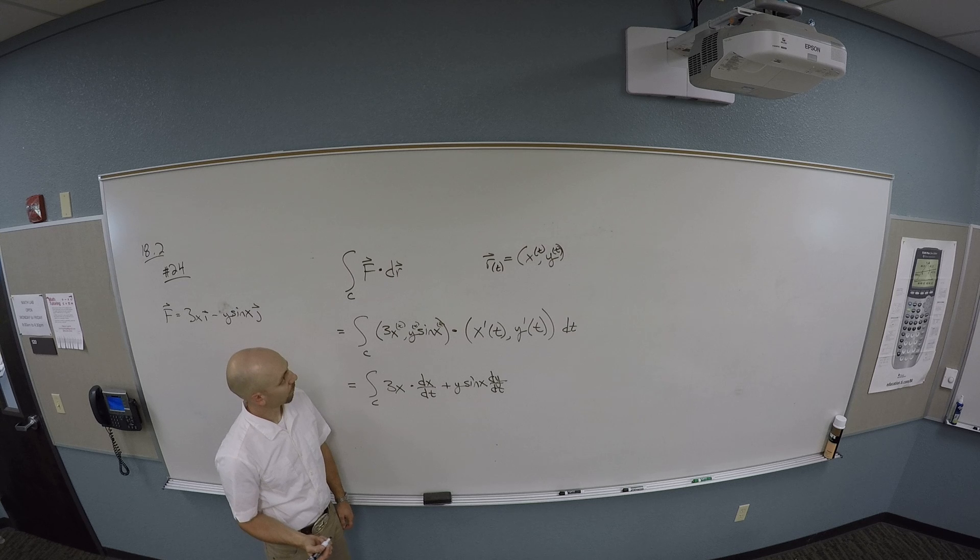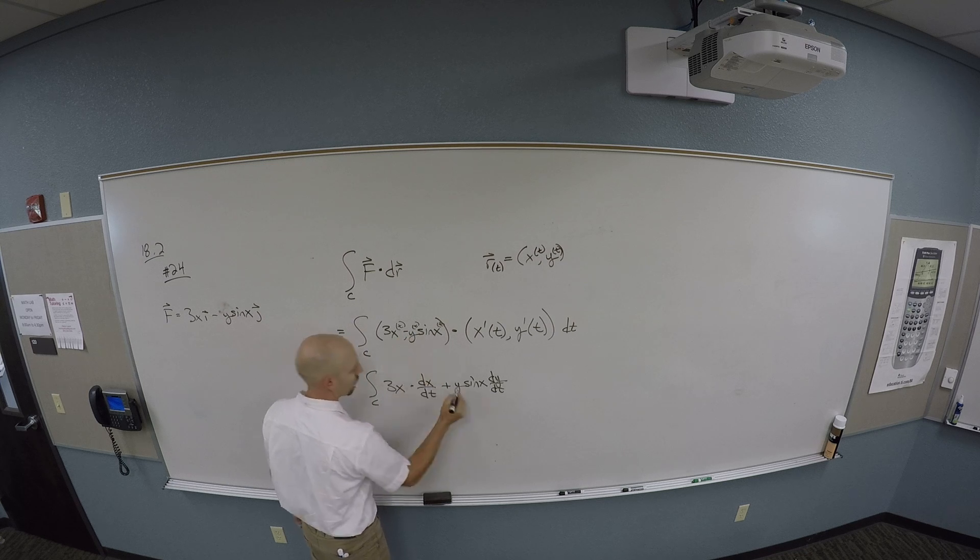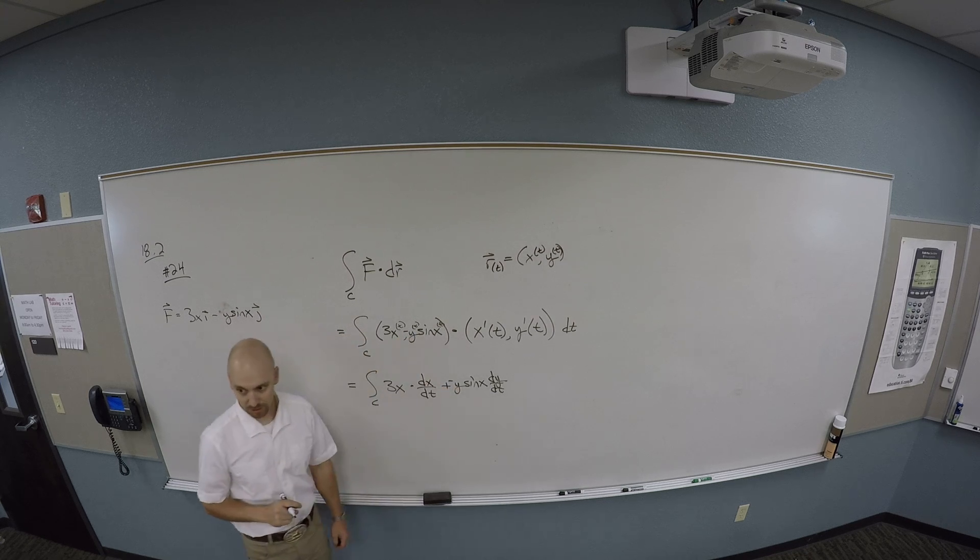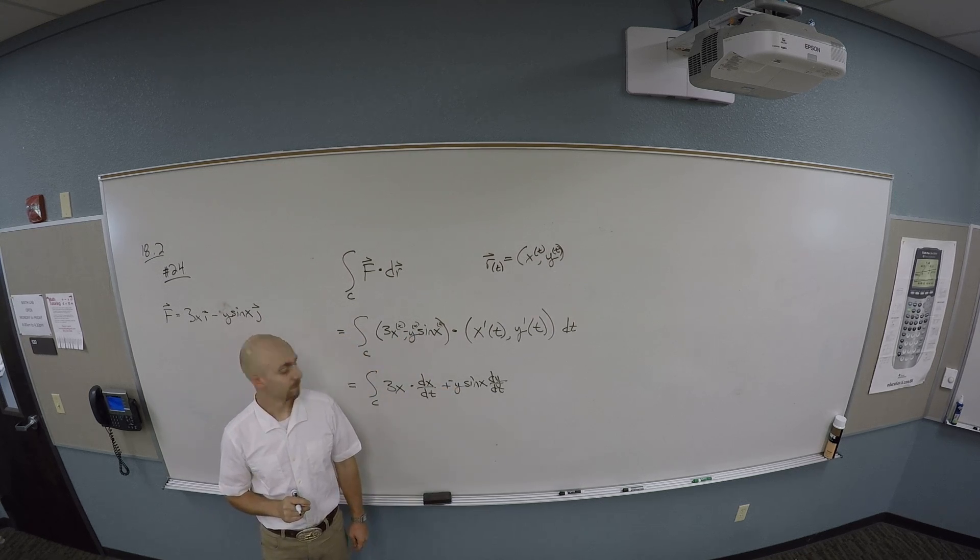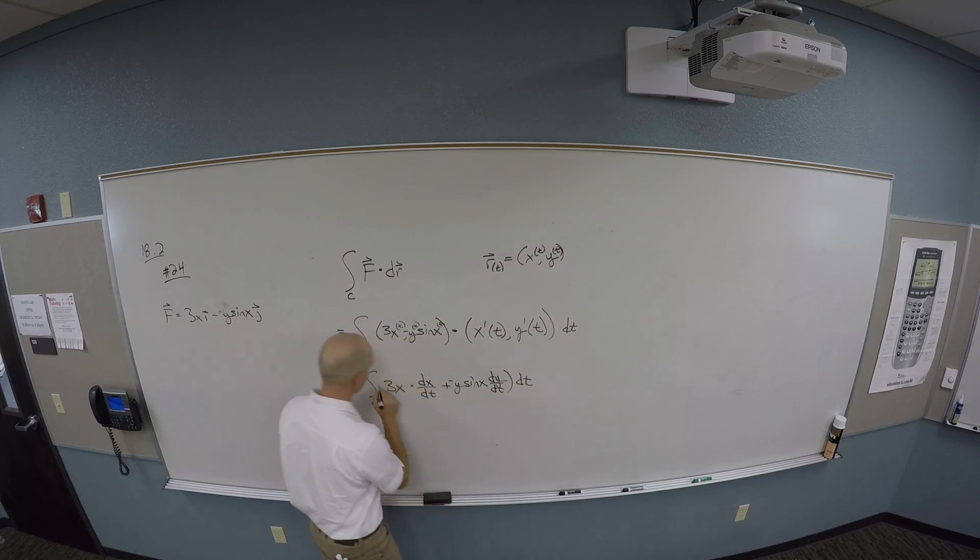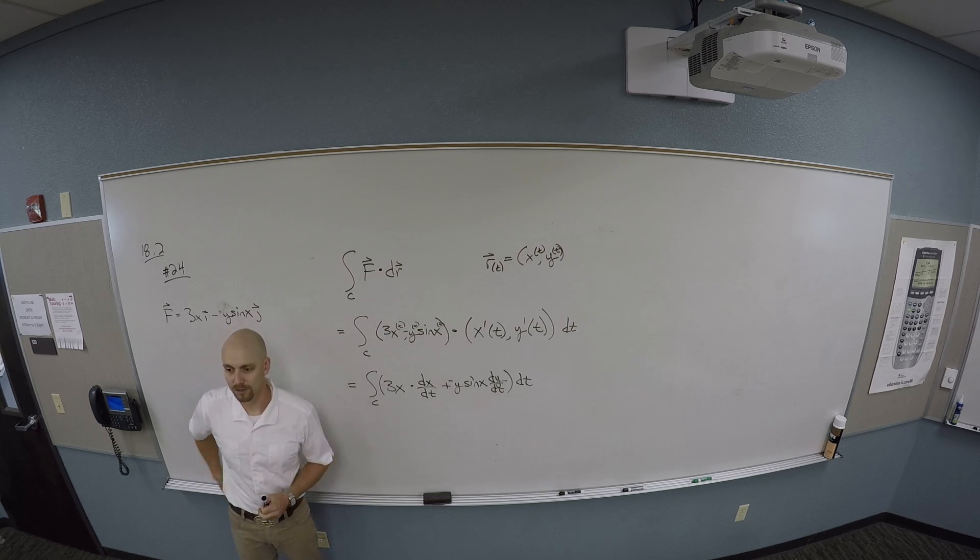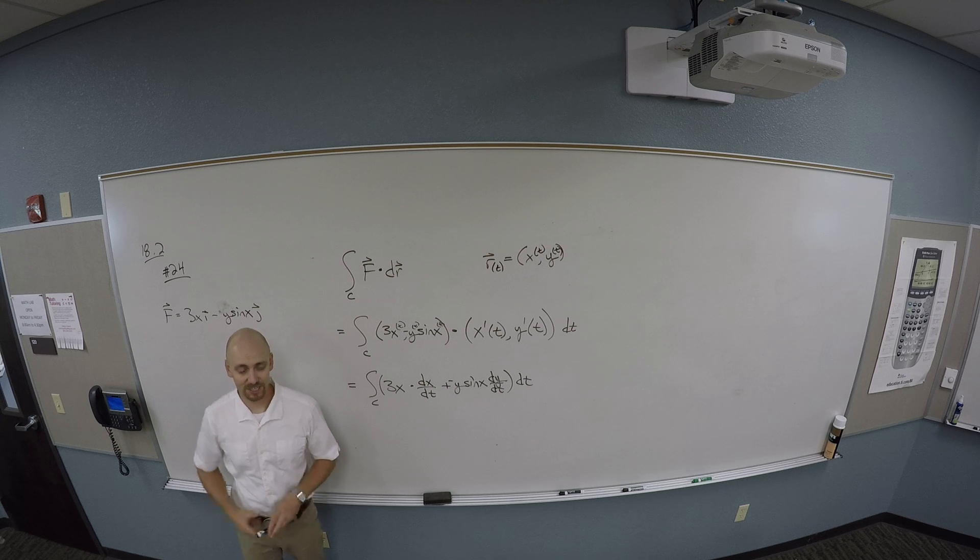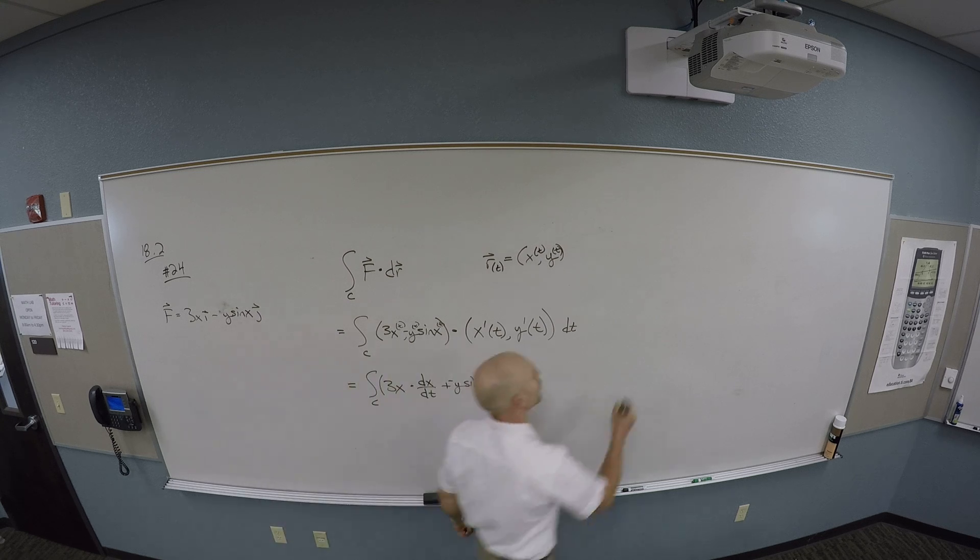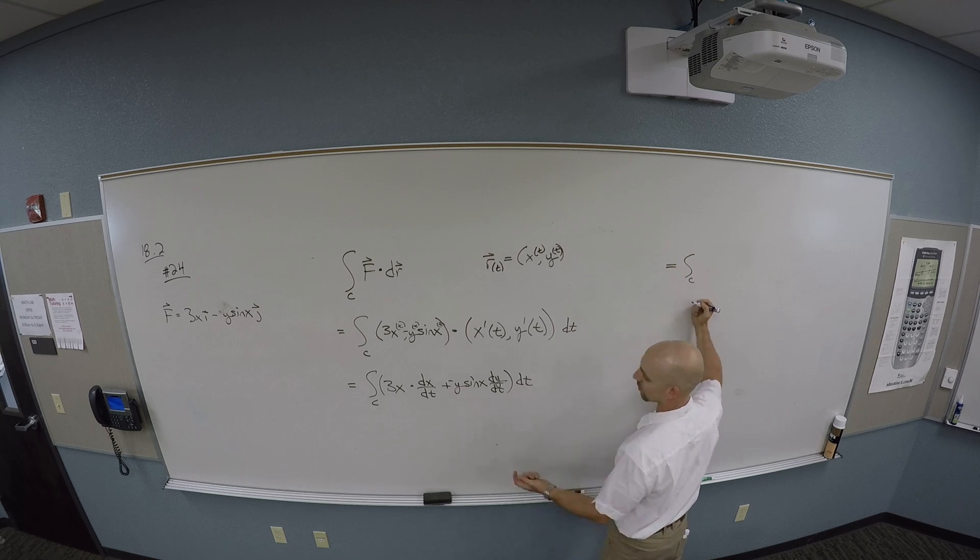Okay, let me write this out and I promise something usable comes out of it. So I've got the integral over c of 3x, and I'm dropping the of t's here, times dx dt.